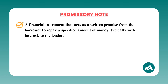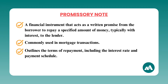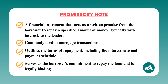Number sixteen: promissory note. A promissory note is a financial instrument that acts as a written promise from the borrower to repay a specified amount of money, typically with interest, to the lender. In real estate, promissory notes are commonly used in mortgage transactions. The note outlines the terms of repayment including the interest rate and payment schedule. It's an important document because it serves as the borrower's legally binding commitment to repay the loan.